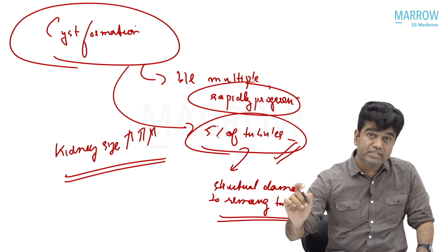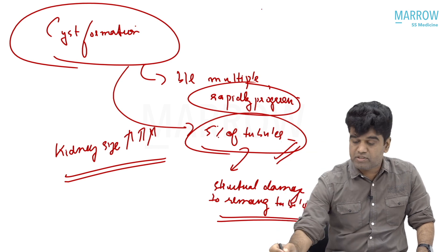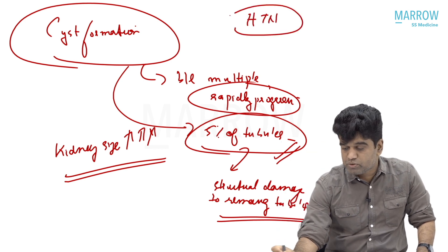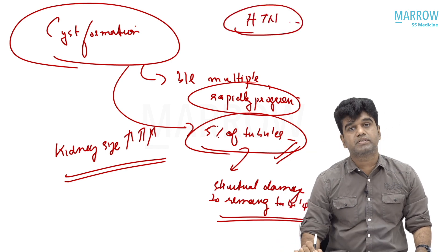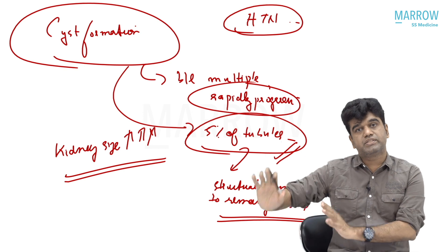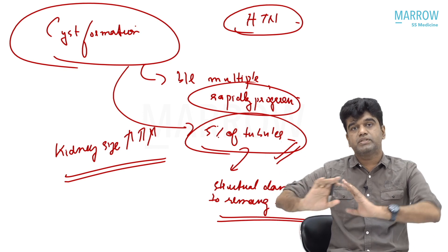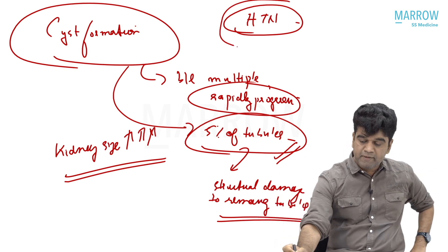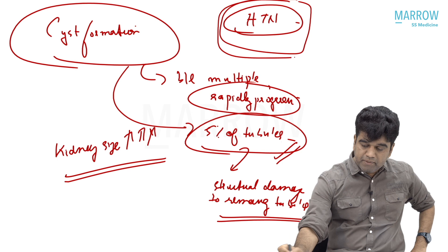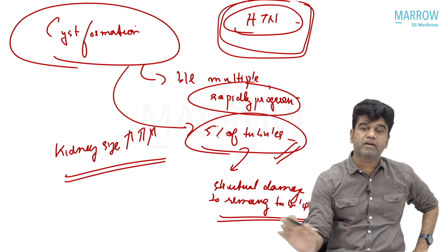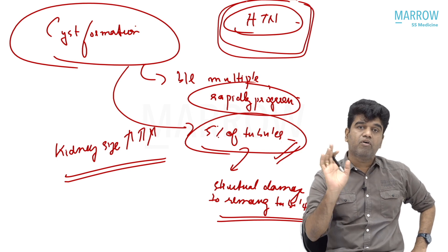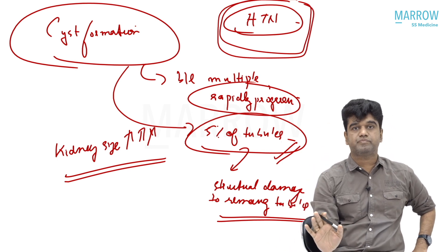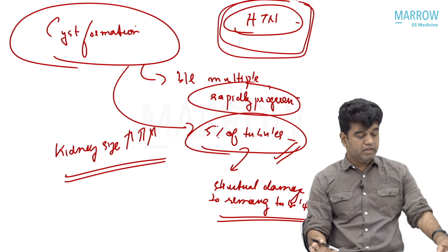The same polycystin is seen in the vascular smooth muscle, so hypertension is very much an accompaniment. Hypertension with cyst formation is how you have to put it, because there is nothing without hypertension in this disease. The single most important factor, if you ask, is always hypertension.